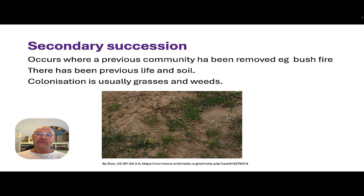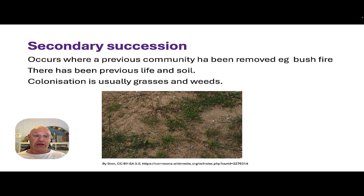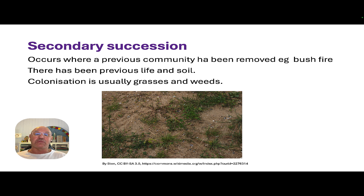Secondary succession occurs when there has been life before — there's been a community that was wiped out, perhaps from a bushfire or a landslide. The colonizers at this time are often grasses and weeds, still r-selected species. Their seeds get dispersed into the area through the wind, germinate and grow really quickly, helping to hold the soil together and improve the soil.